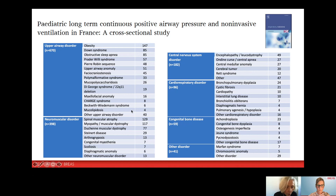The most common neuromuscular disorders were spinal muscular atrophy and myopathic or muscular dystrophy, followed by Duchenne muscular dystrophy. A certain number of children were also treated with CPAP or NIV due to central nervous system disorders, the most common group being children with encephalopathy, followed by Ondine's curse or central apnea, central medullary anomaly, and cerebral tumour.